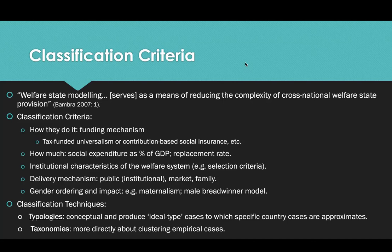An essential classification criterion that feminist scholars and activists introduced mainly in the 1990s was a focus on the gender ordering of access and eligibility to welfare provision. This reflects the gender norms that underpin social policy architecture, as discussed in Module 1. Is the underlying normative assumption one that assumes women are homemakers and men are breadwinners? Or is it one that frames access based on active labor market participation of women and non-gender-specific engagement in domestic care activities?